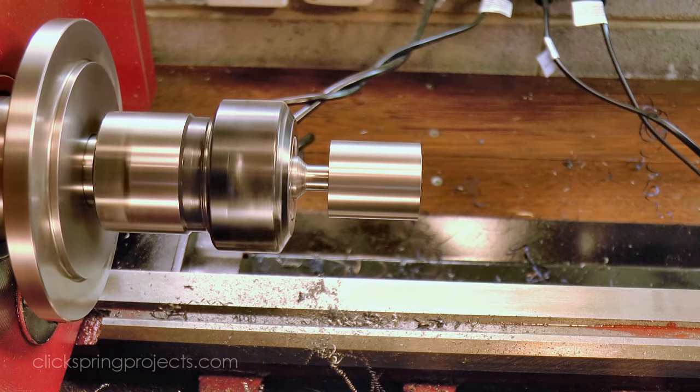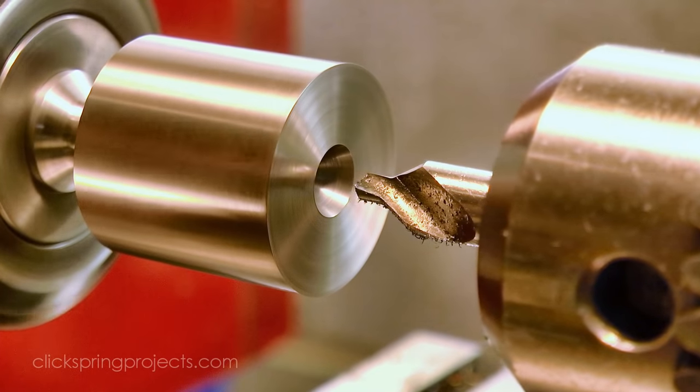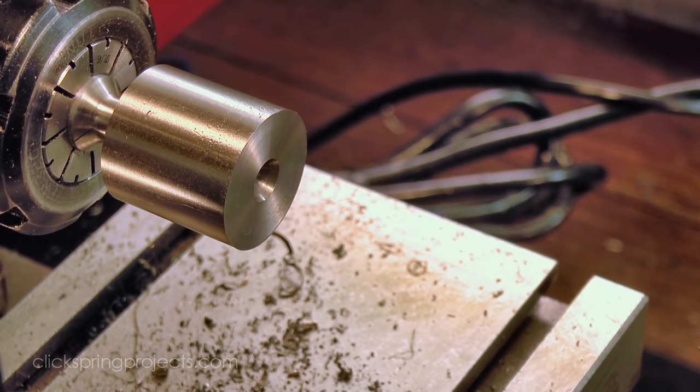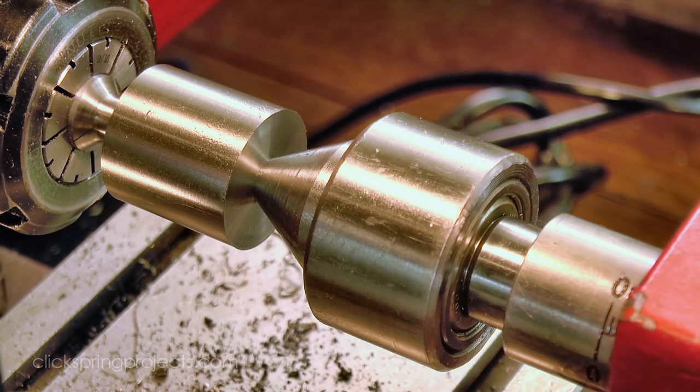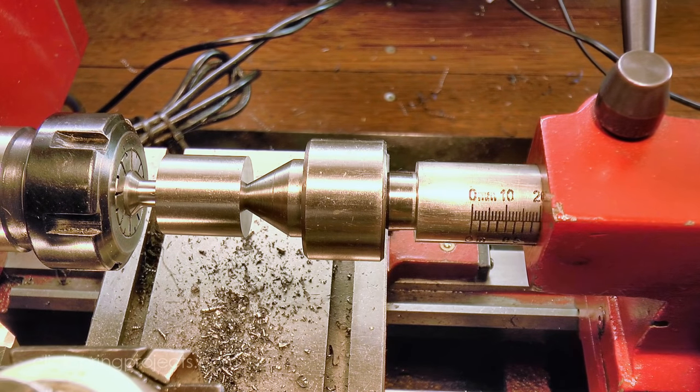And you can see there's quite a bit of work sticking out from the collet, and it's all supported by that narrow shank, so a bit of tailstock support will be needed to get an accurate cut. Once that support was in place, I formed the tapered profile of the cutter.